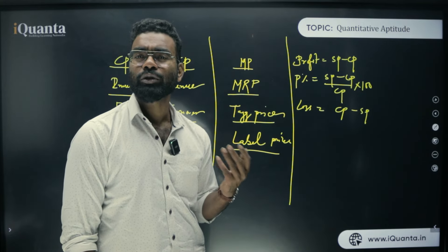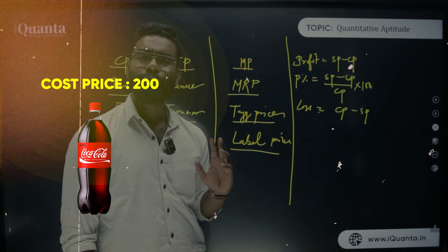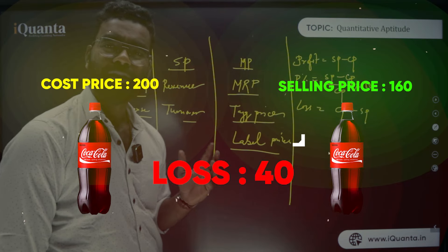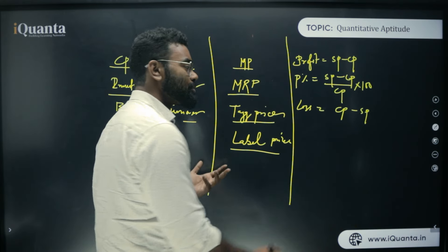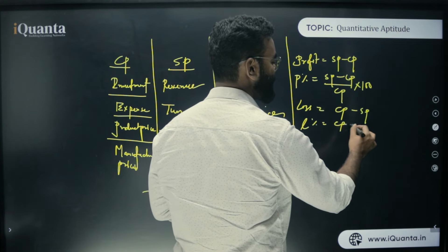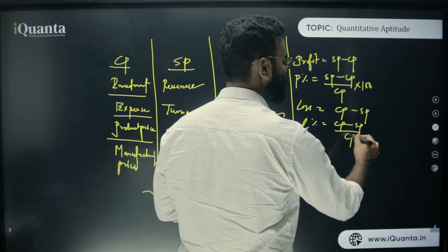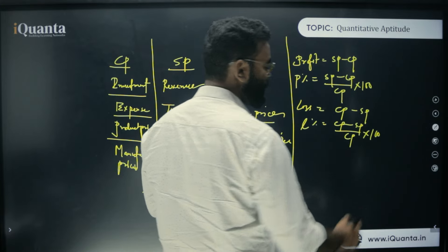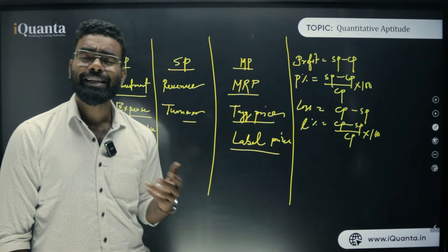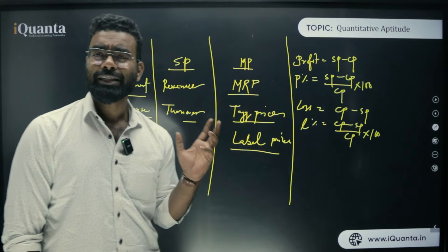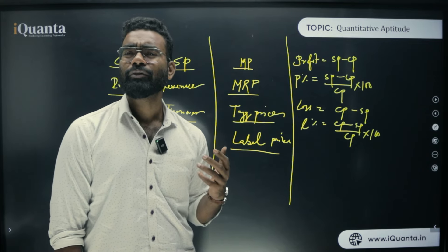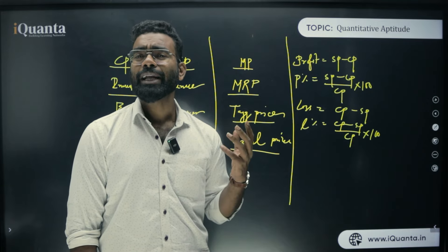Loss is basically CP − SP, because loss happens when your cost price is more than your selling price. For example, if you bought a product at 200 rupees and sold it at 160 rupees, you made a loss. Loss percentage = (CP − SP) / CP × 100 — also calculated on cost price if nothing is mentioned. Next, discount is the difference between mark price and selling price — it's the 'off' you get when buying from somewhere like Amazon.